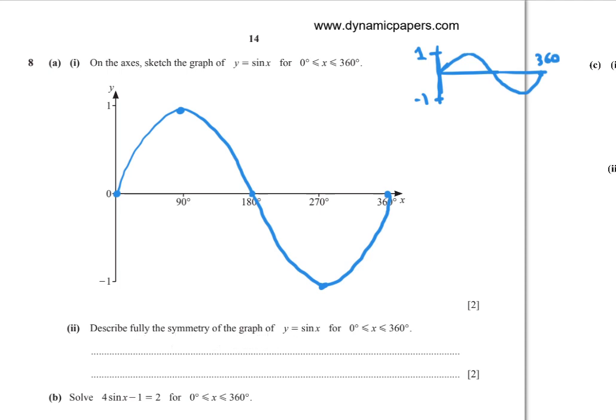Part (b): Describe the symmetry of y equals sin x for 0 less than or equal to x less than or equal to 360. There are no lines of symmetry because no line divides the graph into two matching halves. For rotational symmetry, rotating 180 degrees about the centre (180, 0) gives the same shape, so the order of rotational symmetry is 2.